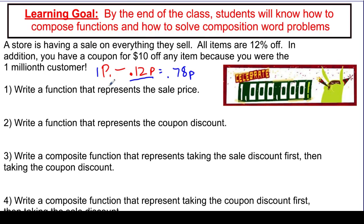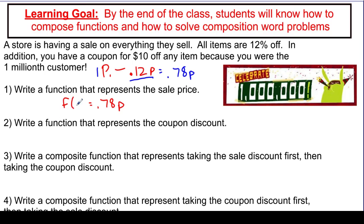We're going to do another example so you'll see it in action. In this case, I'm going to say that f of p represents the sale price, and that is represented by 0.78 times the price. We use p as our variable, so f of p equals 0.78p. Whenever you plug in the price, what comes out is 78% of the price — that's the sale price function.